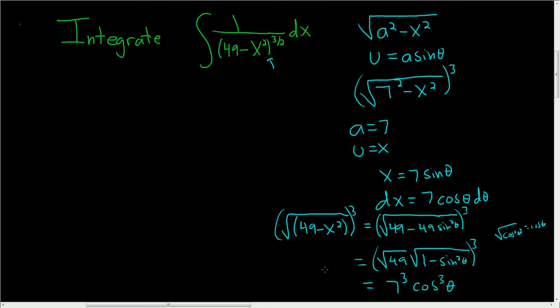Now we're ready to rewrite everything in terms of theta. So our original integral becomes the integral of, well, dx is 7 cosine theta d theta. So that will go in the numerator.